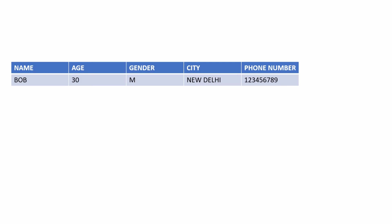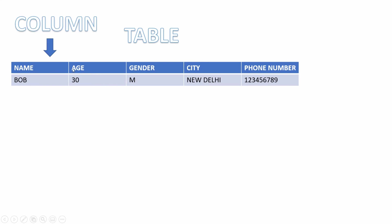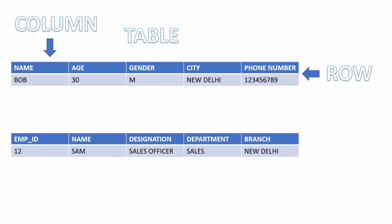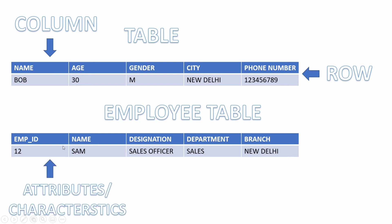This is how my customer table will look like. Here, name signifies a column, so does age, and all the columns grouped together for a person signifies a row. We will also capture similar information for our employee, and this is how our employee table will look like. Columns capture the attributes of a real-world entity, which is also known as a table in the database.